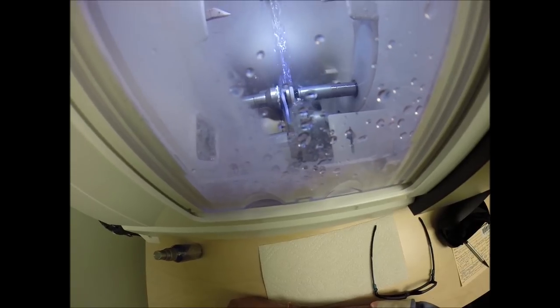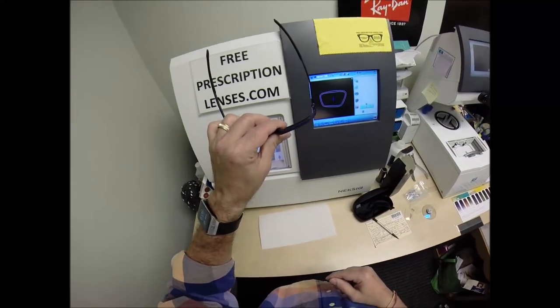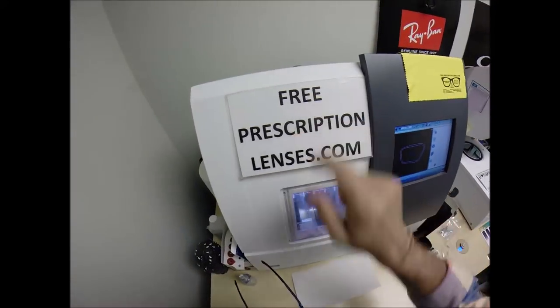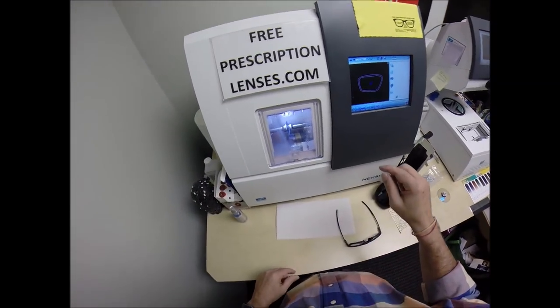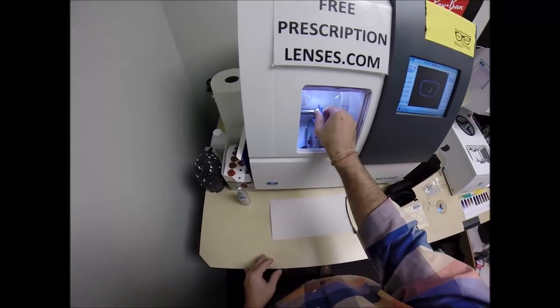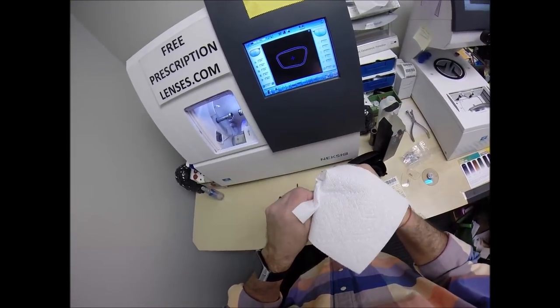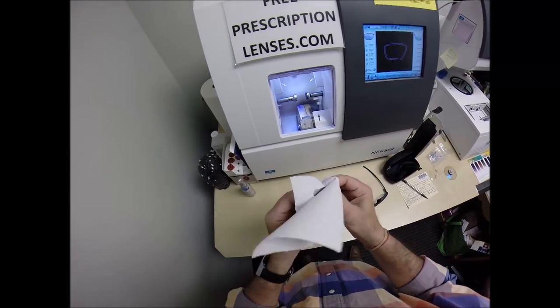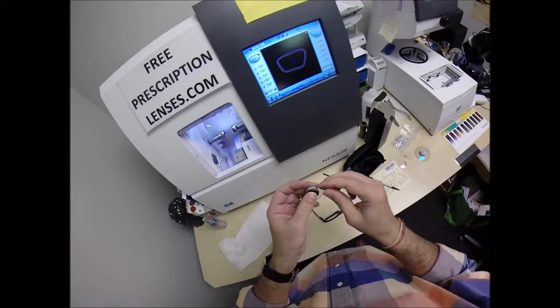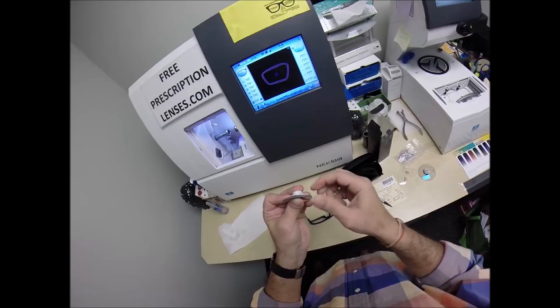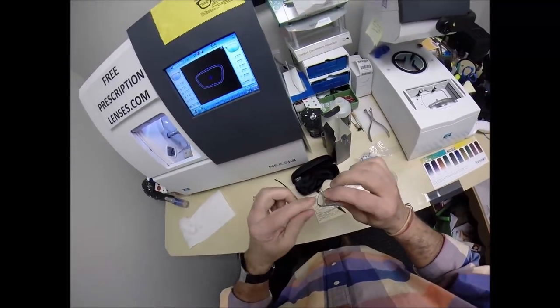The little lever is going to come into view. At the end of that is a spinning disc that's going to apply the safety bevel, which is just going to smooth out the back surface of the lens. I cut some stronger prescriptions all day long for free when you buy a frame from me.